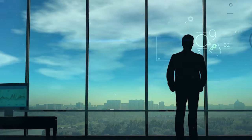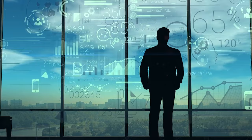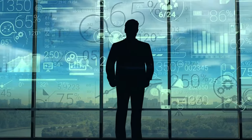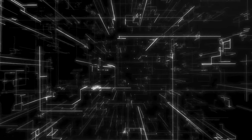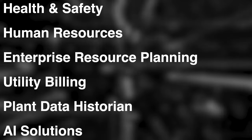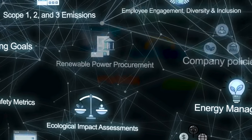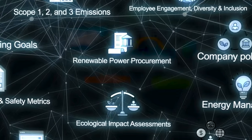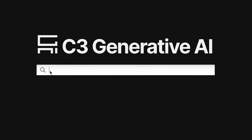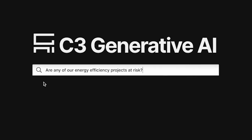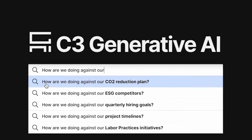Armed with this information, Chief Sustainability Officers can inform the company's ESG strategy, monitor emerging risks, and proactively keep disclosures and plans in line with stakeholder expectations. In this notional example, a Chief Sustainability Officer using C3 Generative AI for ESG can instantly access information across all enterprise applications such as health and safety, HR, enterprise resource planning, and others, as well as numerous siloed data sources such as environmental audits, diversity and inclusion programs, energy efficiency programs, and supplier engagement initiatives. An ESG professional may want to ask questions such as 'Are any of our energy efficiency projects at risk?' or 'How are we doing against our CO2 reduction goals?'